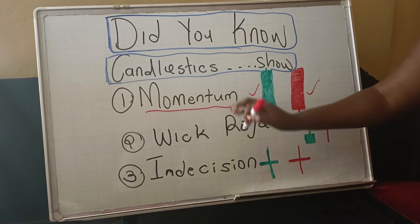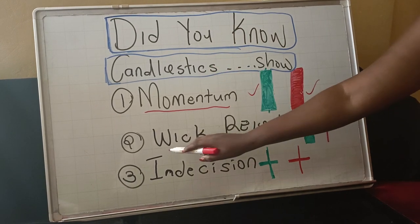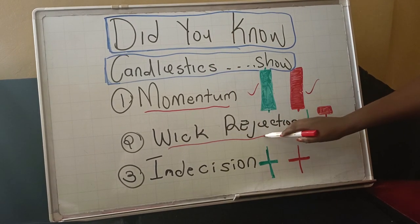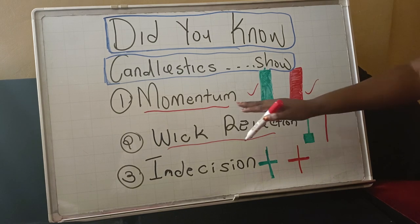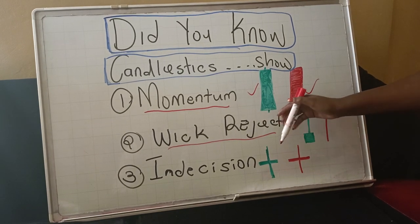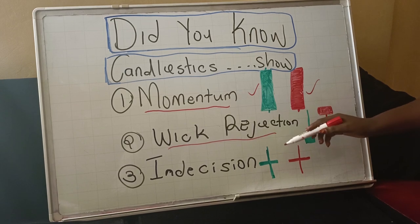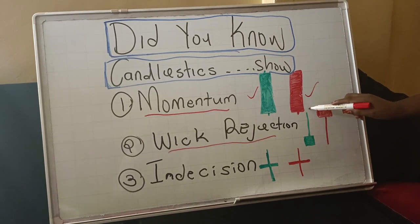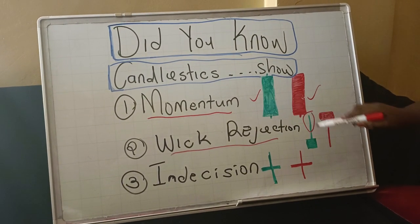The next thing that your candles will be showing you is weak rejection candle. So there is weak rejection in the market. The market is getting rejected. If it shows rejection, we have the presence of the wick.